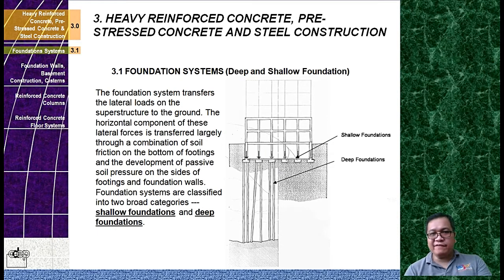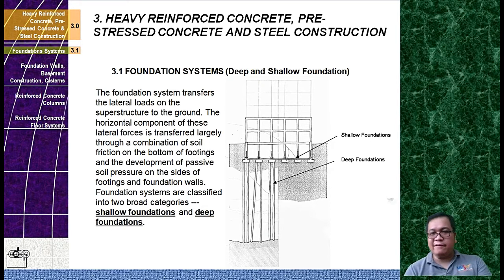The foundation system transfers the lateral loads on the superstructure to the ground. The horizontal component of these lateral forces is transferred largely through a combination of soil friction on the bottom of footings and the development of passive soil pressure on the sides of footings and foundation walls. Foundation systems are classified in two broad categories: shallow foundations and deep foundations.